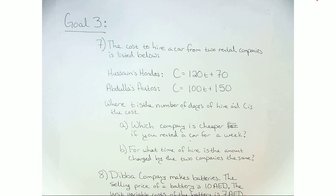We are looking at question number seven. The cost to hire a car from two rental companies is listed below: Hussein's Hondas, where the cost equals 120T plus 70, and Abdullah's Autos, where the cost is 100T plus 150. T is the number of days of hire, and C is the cost.